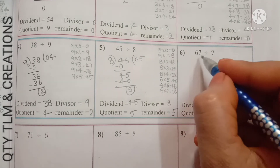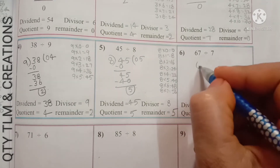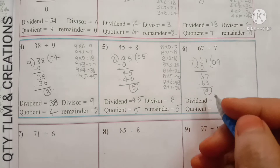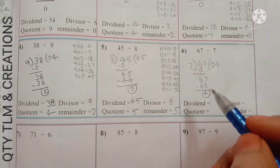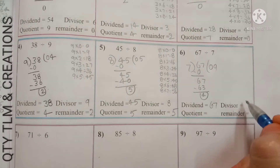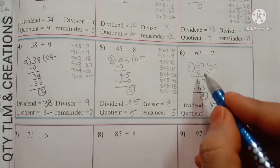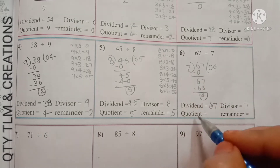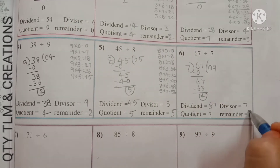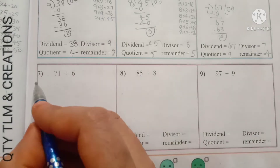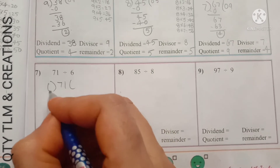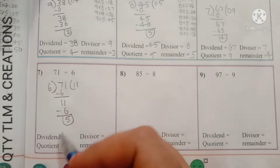Next: 67 divided by 7. After the division, dividend is 67, divisor is 7, quotient is 9, and remainder is 4.